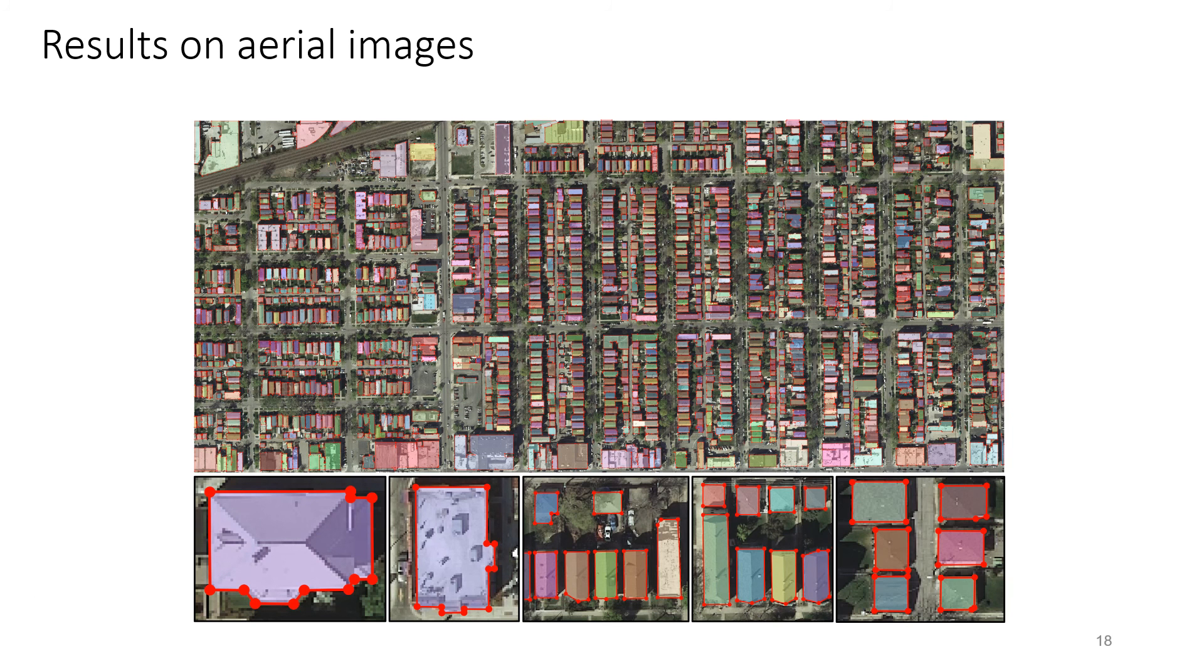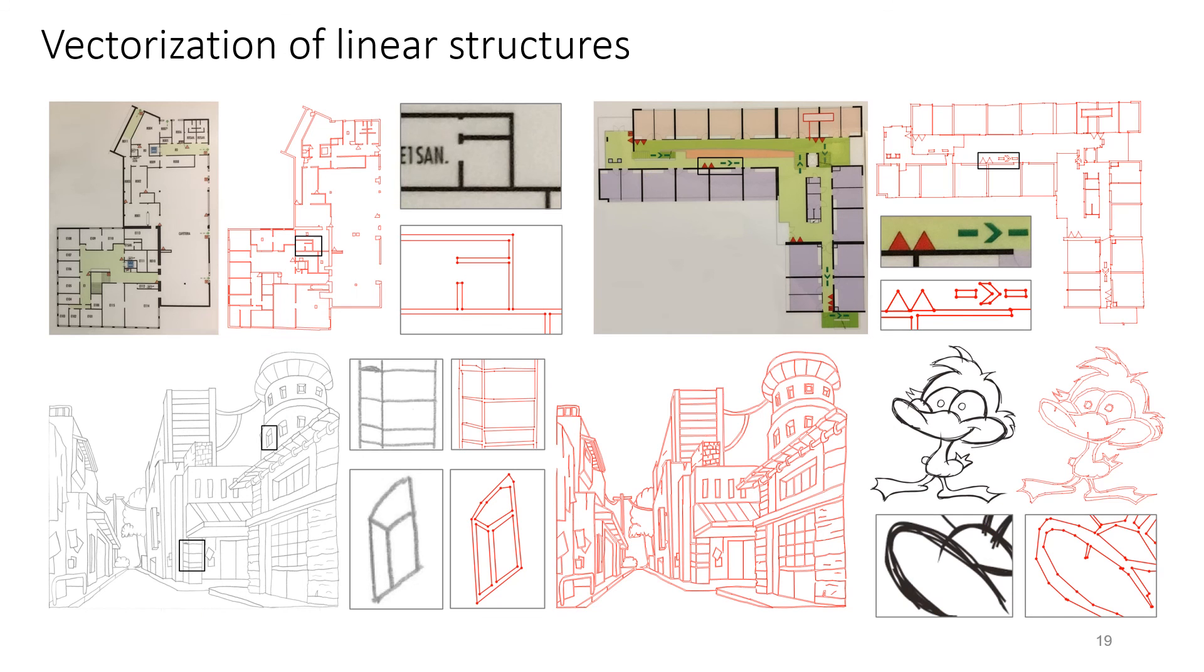This visual example shows that, despite the compact representation, our algorithm can capture some fine details. The potential of our method is further demonstrated on floor map photos and line drawing sketches. Our method is capable of vectorizing linear structures in such scenes.